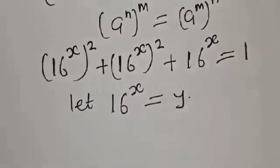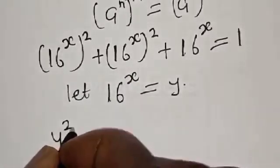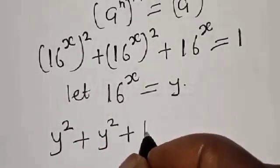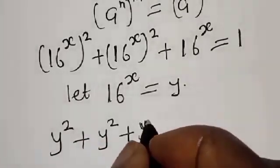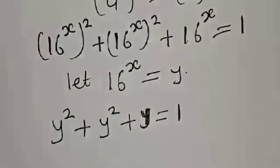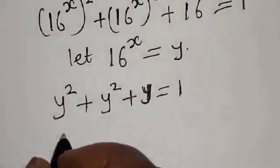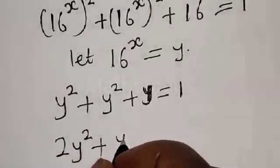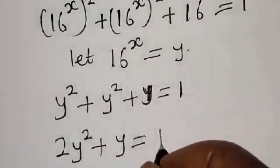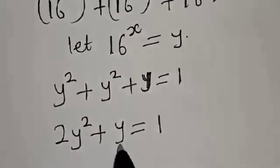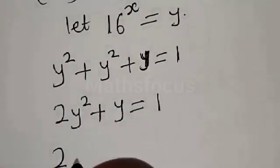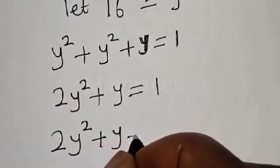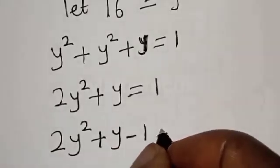Now let y = 16 raised to power s. We have y squared plus y squared plus y is equal to 1. Then y squared plus y squared gives us 2y squared, so 2y squared plus y is equal to 1. Bringing the 1 to the other side: 2y squared plus y minus 1 is equal to 0.